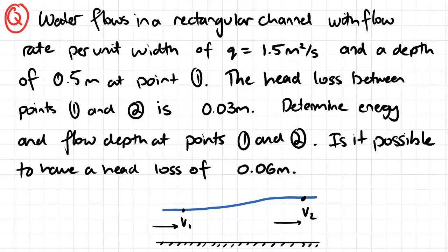So our question here: water flows in a rectangular channel with flow rate per unit width of q equals 1.5 meters squared per second and a depth of 0.5 meters at point 1. The depth at point 2 is 0.5 meters.